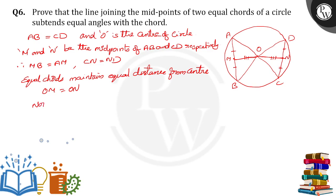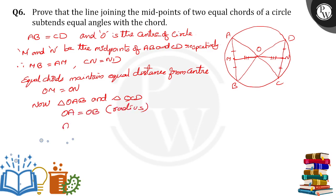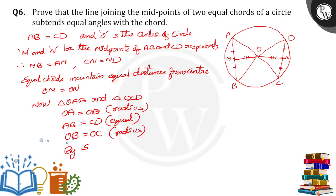Now, taking the two triangles: triangle OAB and triangle OCD. OA is equal to OD, as these are radii of the circle. AB is equal to CD, as given equal chords. OB is equal to OC, also a radius of the circle. So by using SSS congruence, the given two triangles are congruent.